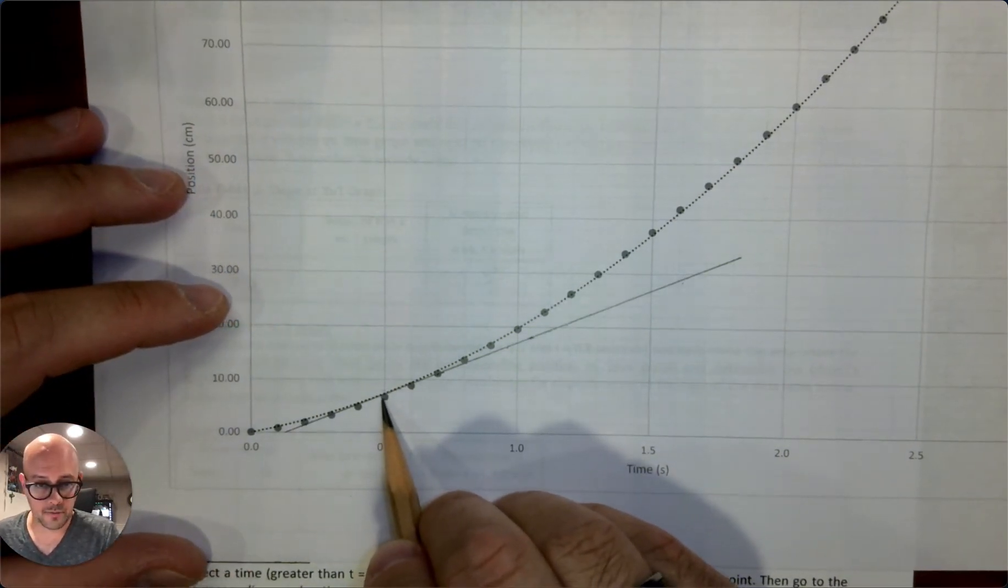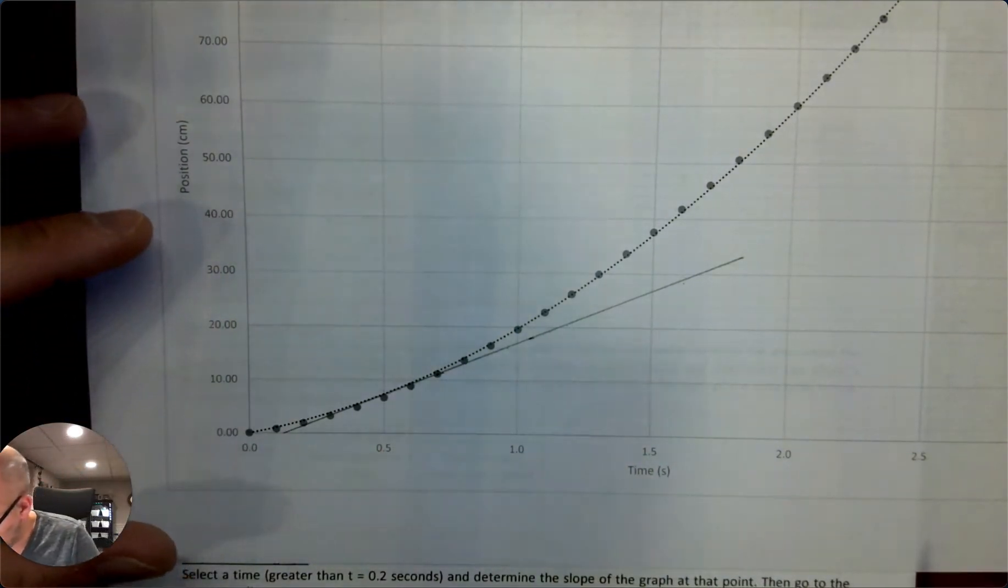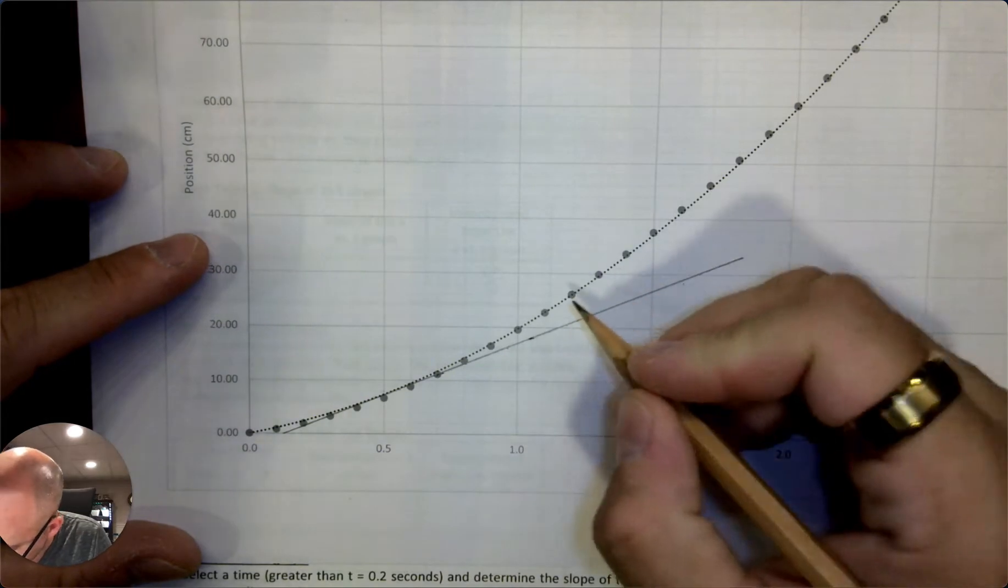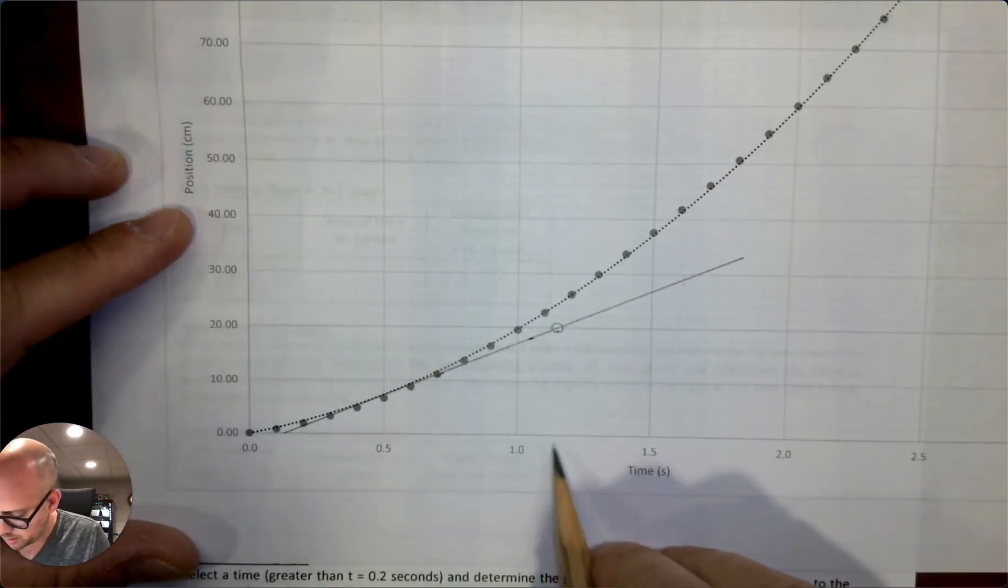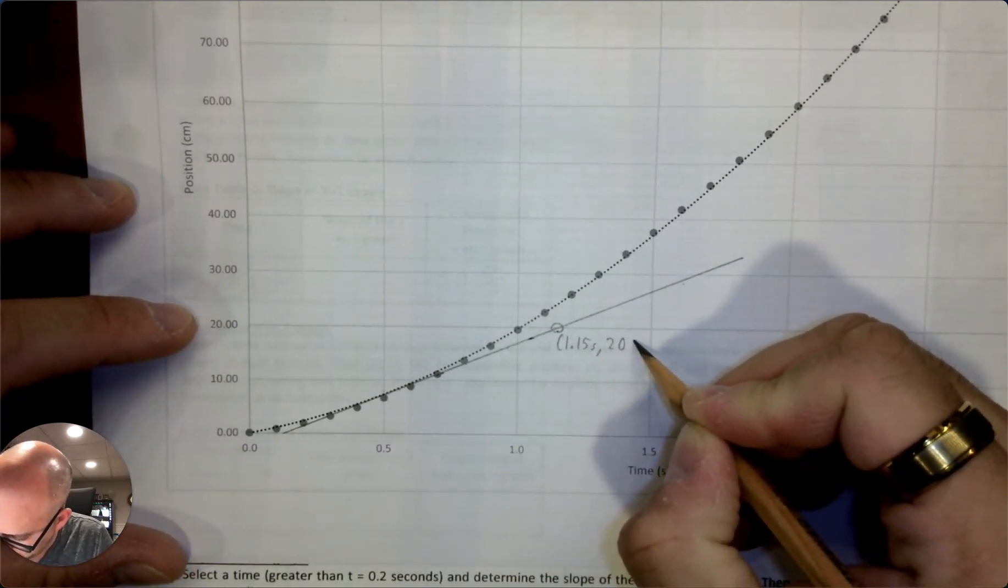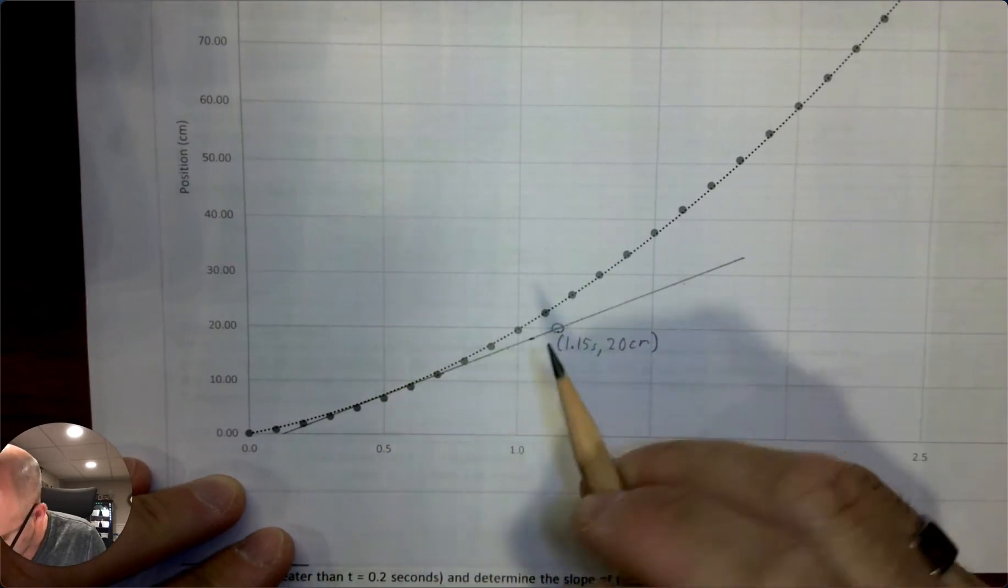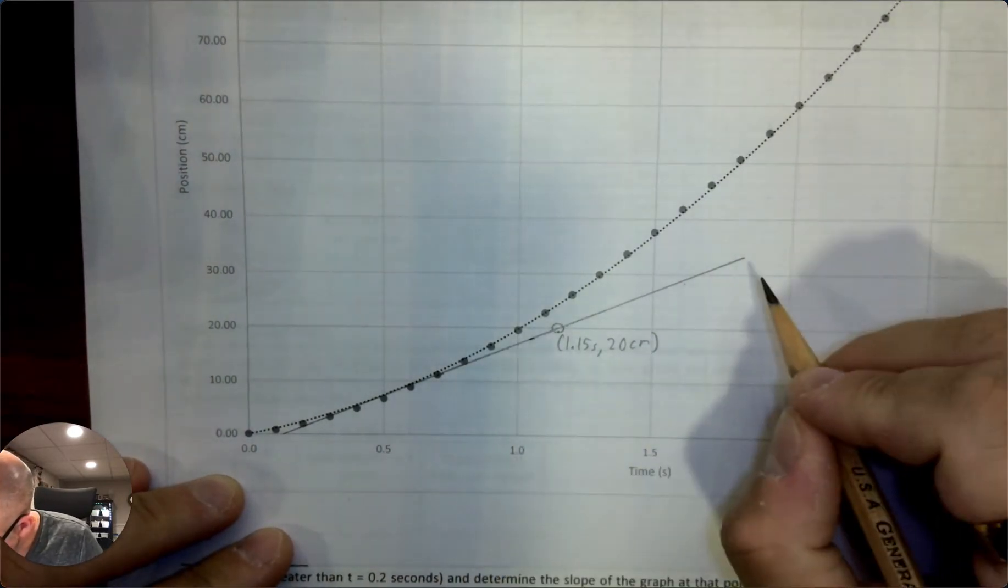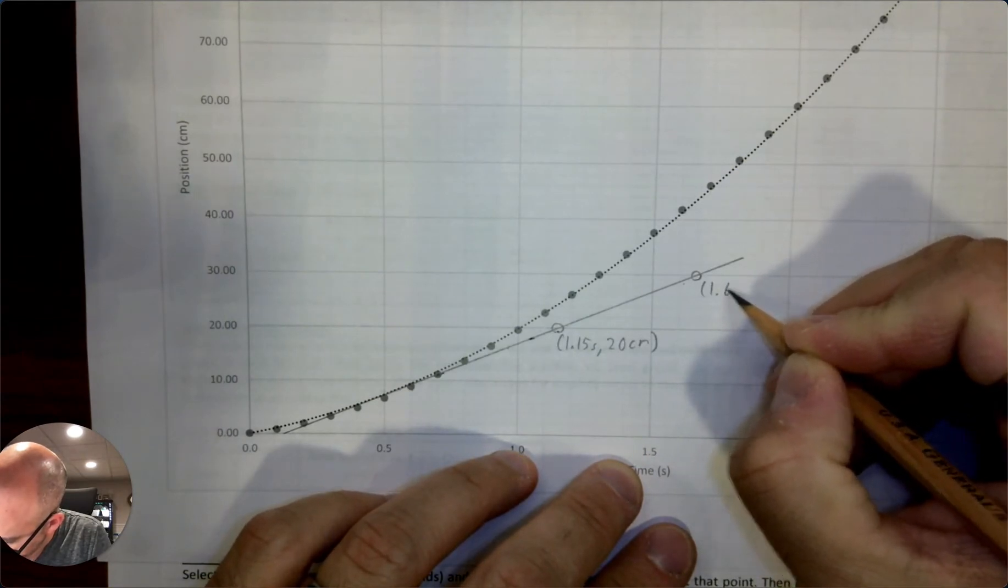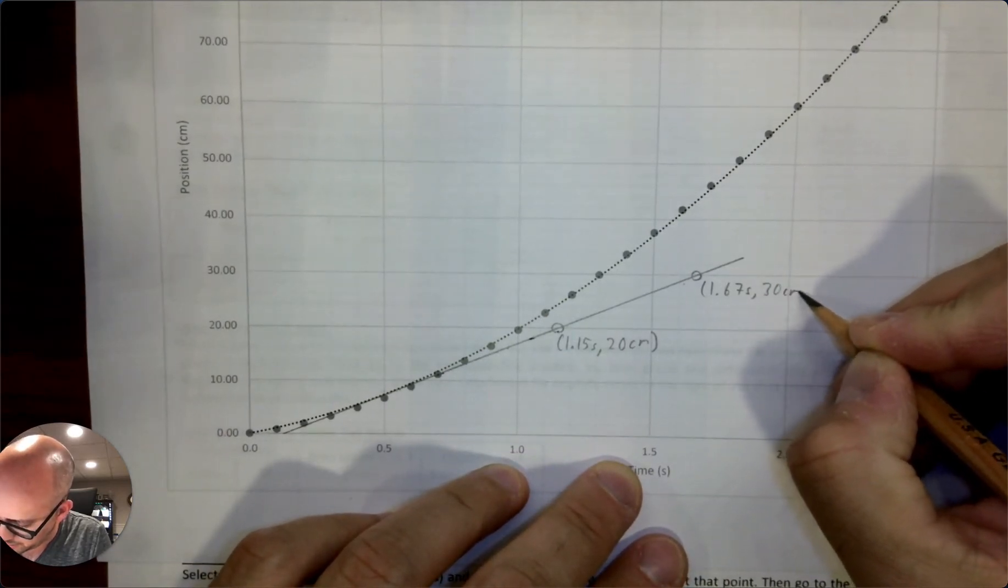Now you've selected the time of 0.5 seconds. What you want to do next is find any two points along the line that you can read clearly and identify the ordered pair. So none of mine really go exactly through a grid line that I can see. So I'm going to identify this one. So this is 1.15 seconds and 20 centimeters. So that's one of my points. And then it's kind of hard to see another one. So we'll just say, I'm going to make up here. I'll make an estimate of this one. And I'll say that this is 1.67 seconds. And that's 30 centimeters.